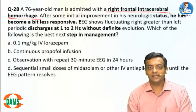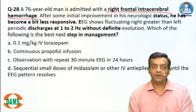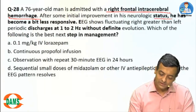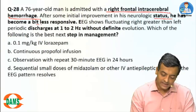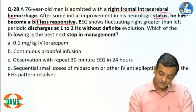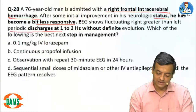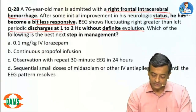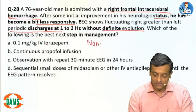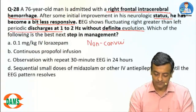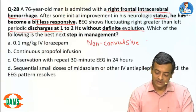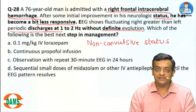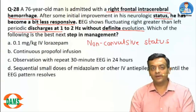Question 28: A 76-year-old man is admitted with right frontal intracerebral hemorrhage. Cerebral hemorrhage is a high risk for epilepsy or convulsion disorder. After initial improvement in neurological status, he becomes less responsive. EEG shows periodic discharges without definite evolution. What is the treatment?